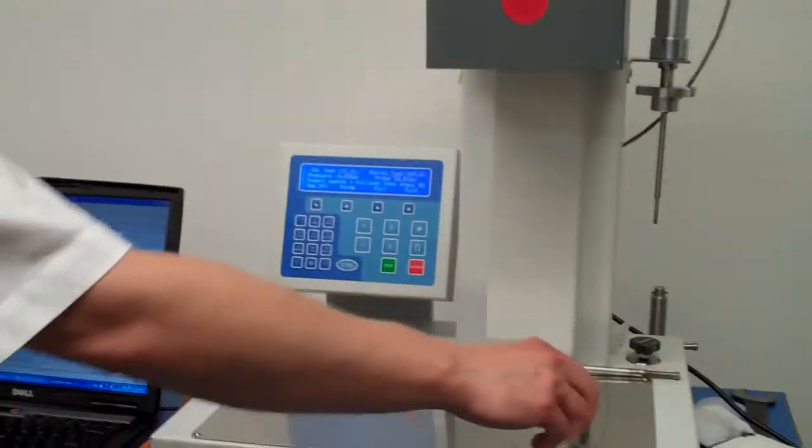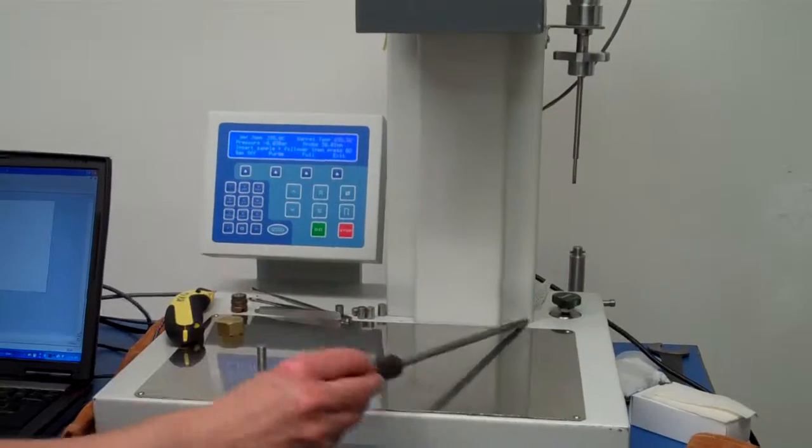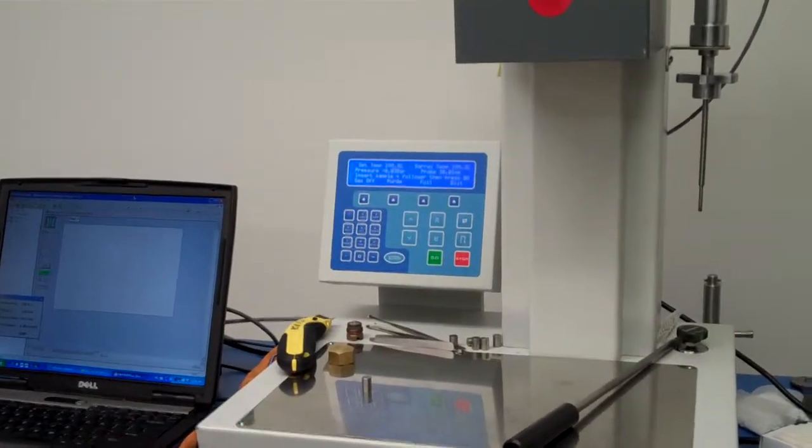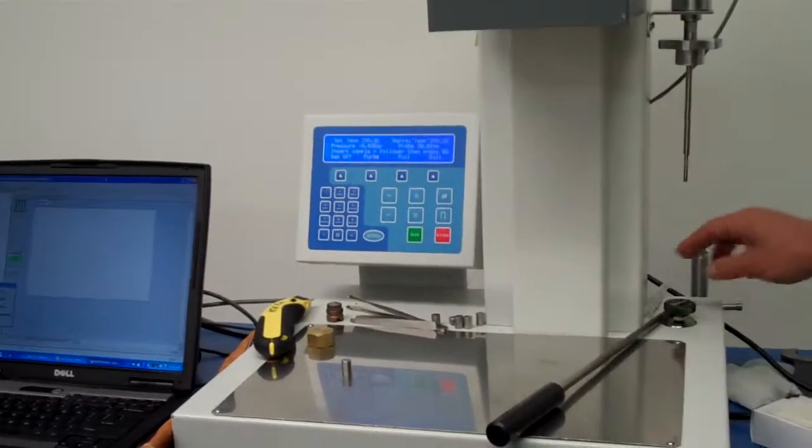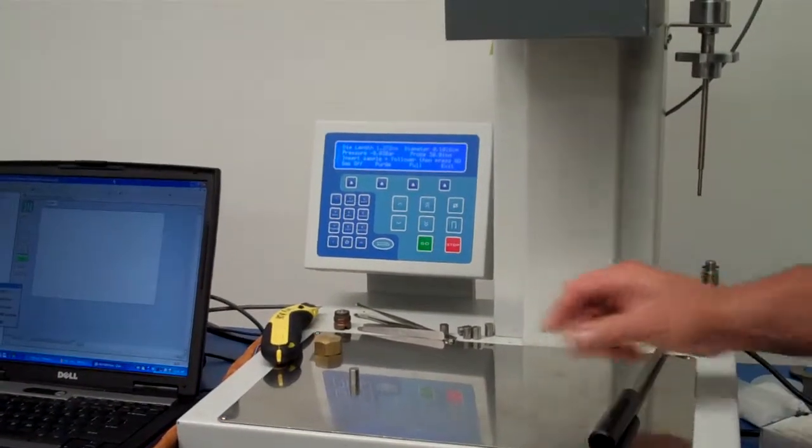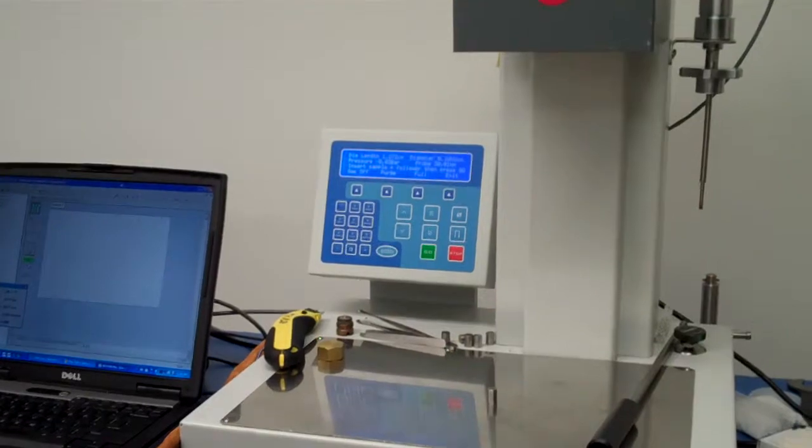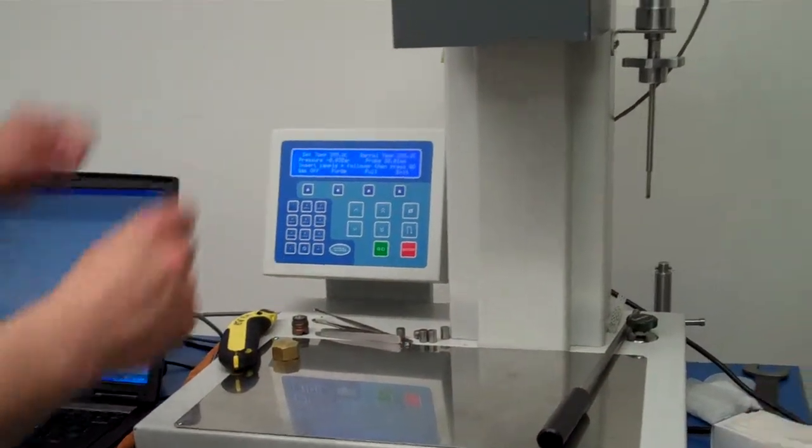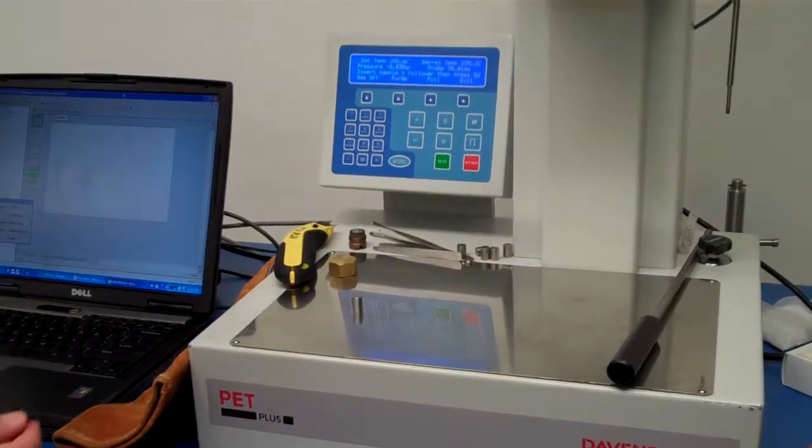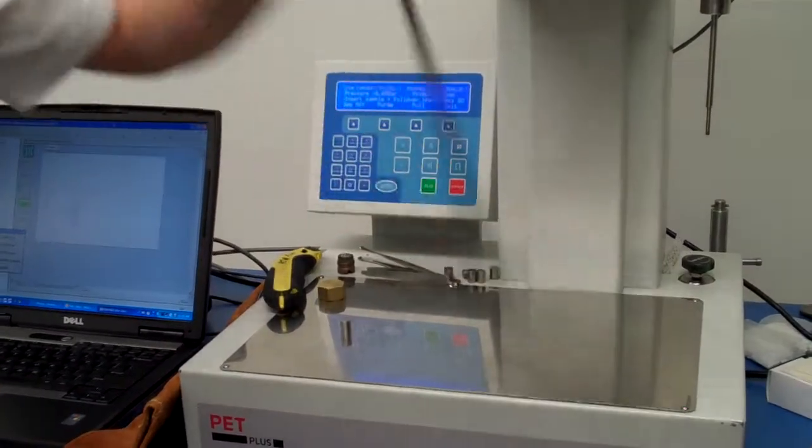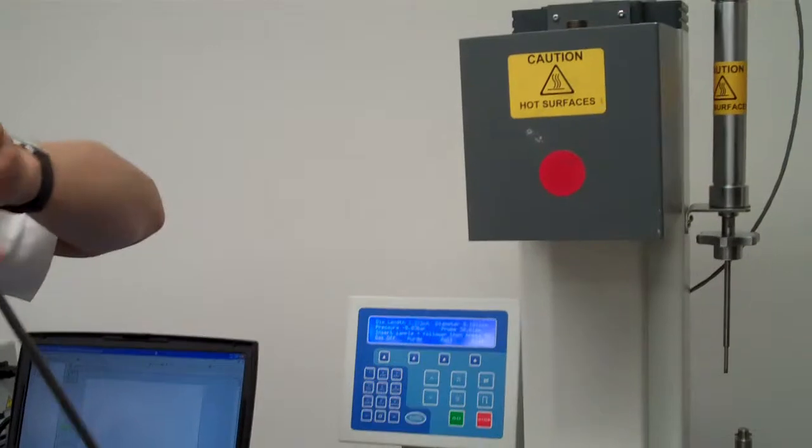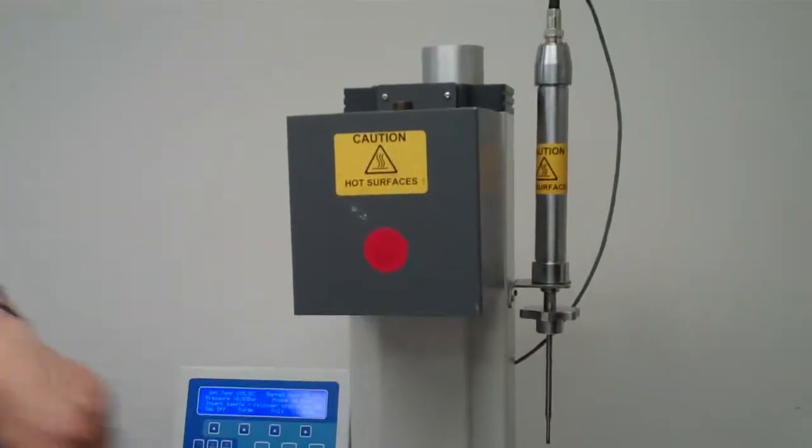And the next step is to get started. The key with this machine is to be organized and have everything ready. Because we need to transfer this into here with the minimal interruption possible. What I'm going to do next is I'm going to put it down here. We're going to put the material in, then the follower. Then we're going to take this and just hold it for a minute just while it compacts. Then we're going to fit the probe and then we're going to switch the gas on.